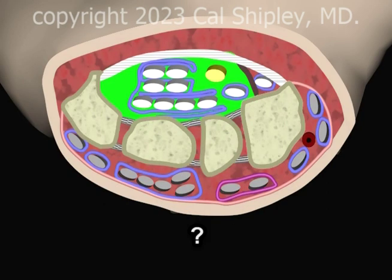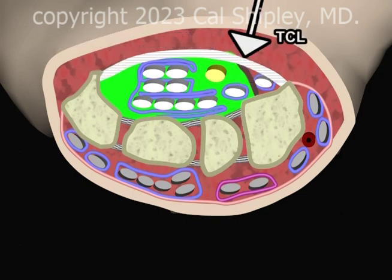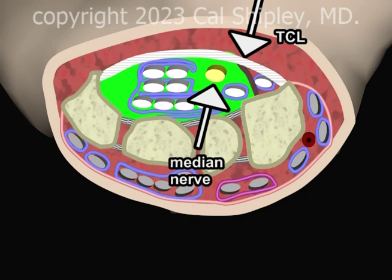Which of the carpal tunnel contents, then, are most likely to increase in volume, and therefore result in compression of the median nerve? While not all researchers agree, it appears most likely that the synovial sheaths of the flexor tendons are the culprits. As demonstrated here, thickening of the synovial sheaths results in compression of the median nerve.